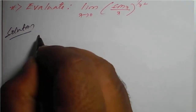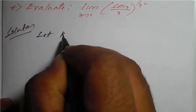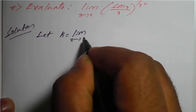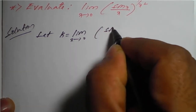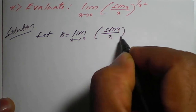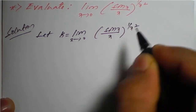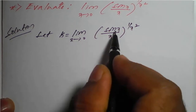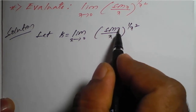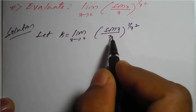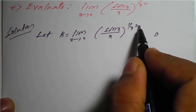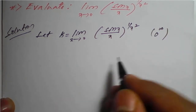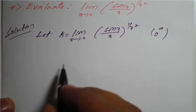The given limit will be considered as: let k is equal to limit x tends to 0 of (sin x divided by x) raised to 1 upon x square. If you apply x equal to 0, sin of 0 is 0 upon 0, and 1 upon 0 square is 1 upon 0 which is infinity. So you can observe it is 0 raised to infinity — an indeterminate form.